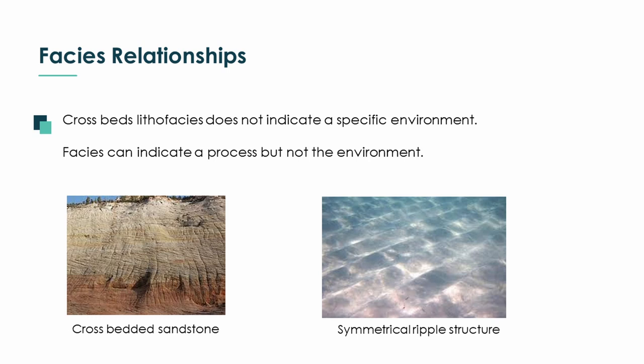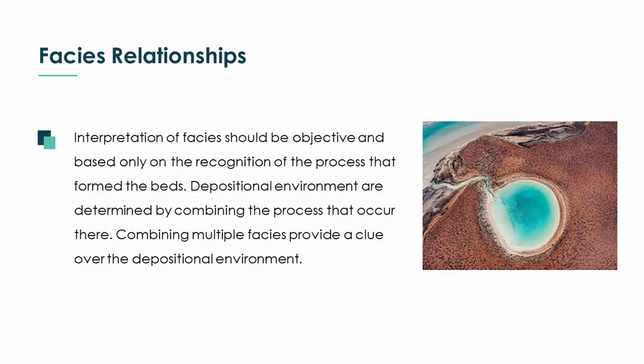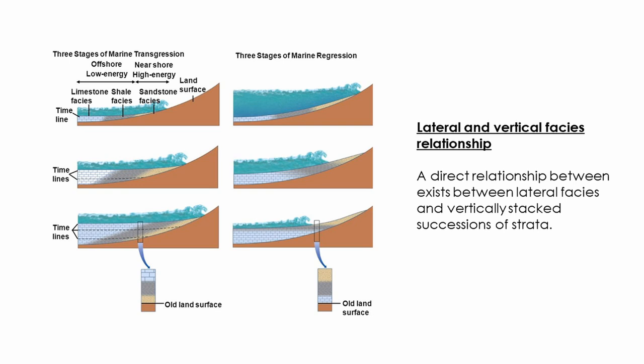A symmetrical ripple structure sometimes indicates a process rather than a specific environment. Also, ten different facies sometimes indicate only one depositional environment, so we have to consider a group of facies rather than just one. Lateral and vertical facies relationships are also considered. According to Walter's Law, a direct environmental relationship exists between lateral facies and the vertically superimposed succession of strata.